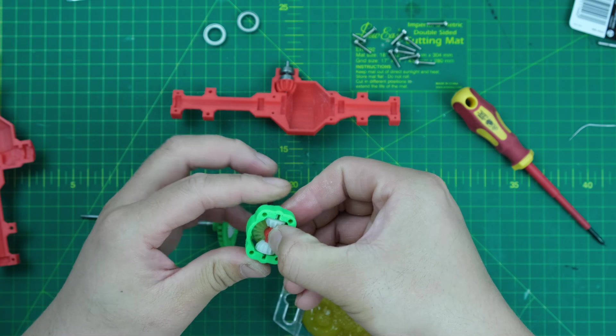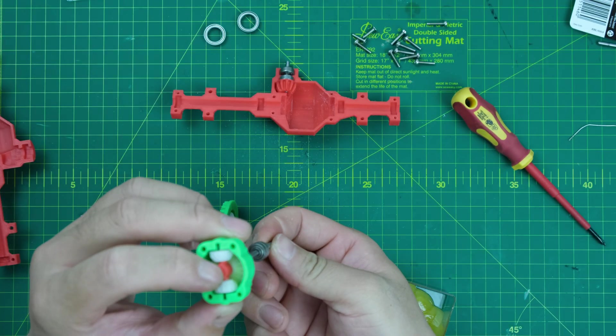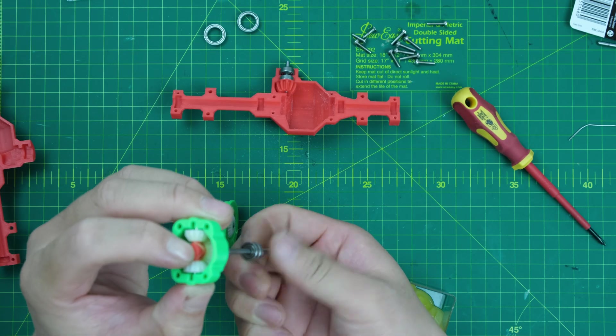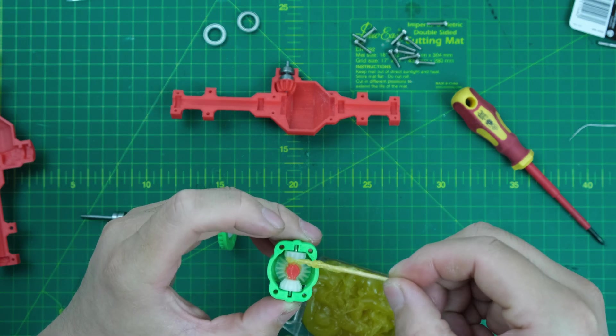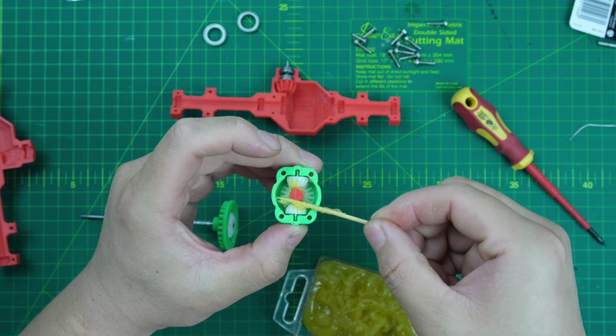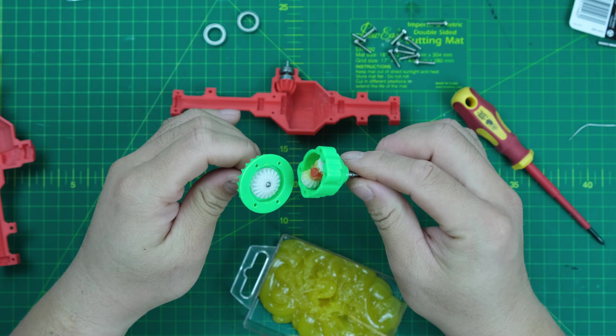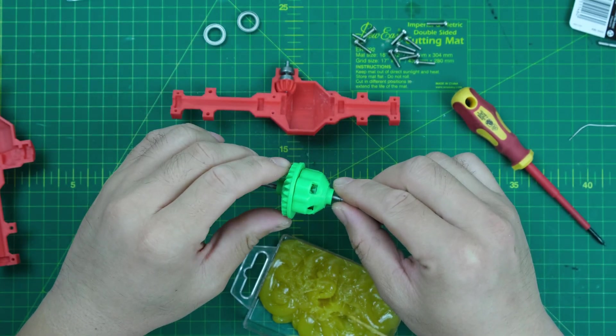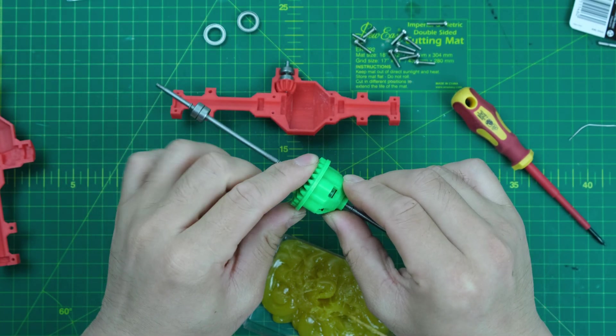Push the pinion gear set in and spin the shaft a few times to spread the grease, or put more grease. Then put the bolts to fix this part. Don't forget to use 10mm bolts here. Otherwise, you're gonna damage the part.